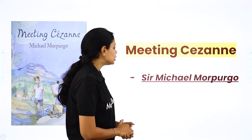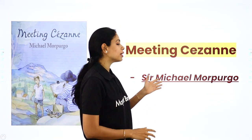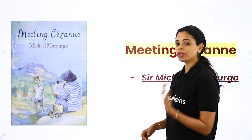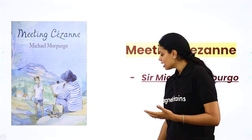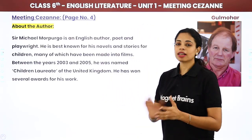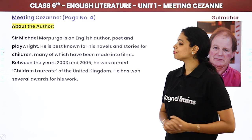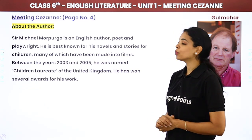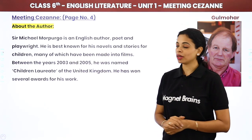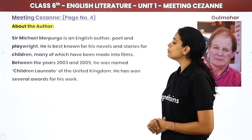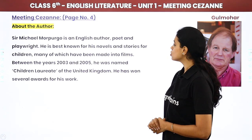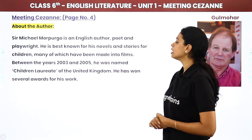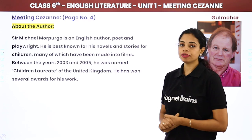The chapter has been written by Sir Michael Morpurgo. First we will start with knowing our author and then we will start with the chapter. Sir Michael Morpurgo is an English author, poet, and playwright. He is best known for his novels and stories for children, many of which have been made into films.